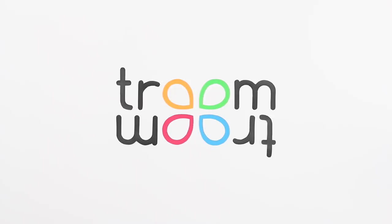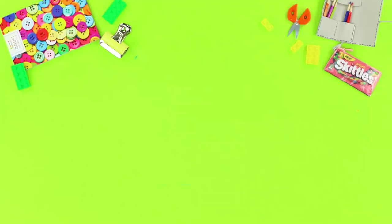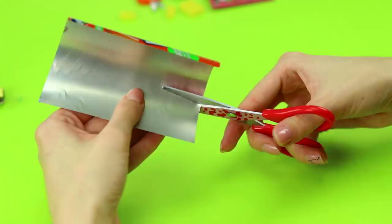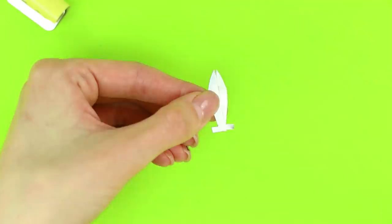For the first life hack, you need a piece of a metal can. Cut out a small square. Fold it and cut out a piece like this. Cut off the excess and get two identical blades.